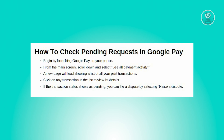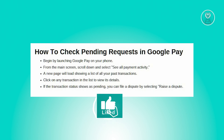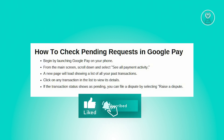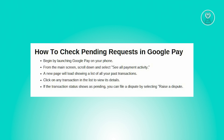After tapping 'See all payment activity,' a new page will open displaying a comprehensive list of all previous transactions made through Google Pay. This includes payments to merchants, transfers to friends, and any other transactions recorded in your account.